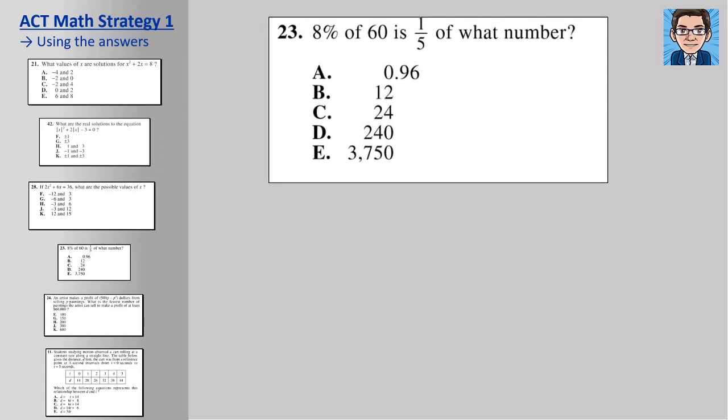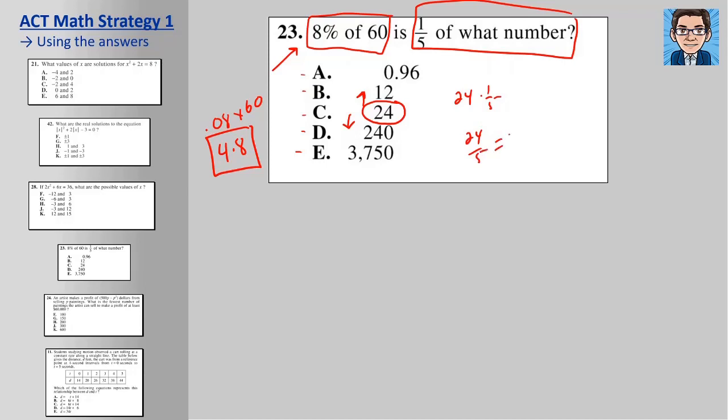This one's a little trickier. You're not plugging the answer directly in, but it's saying eight percent of 60 is one fifth of what number? So let's figure out what this is. Eight percent of 60 is going to be 0.08 times 60 or 4.8. So we're trying to see which one of these things we can multiply by one fifth to get 4.8. One thing when you plug in answers, you'll notice unless the answer is something about which one is the largest, you'll notice that the answers typically go in order. So they get bigger as you go around. A good strategy is to start in the middle.